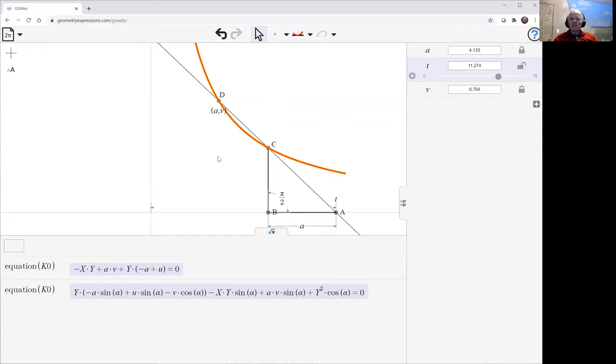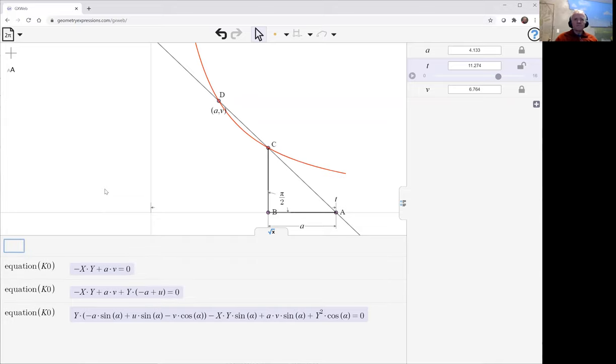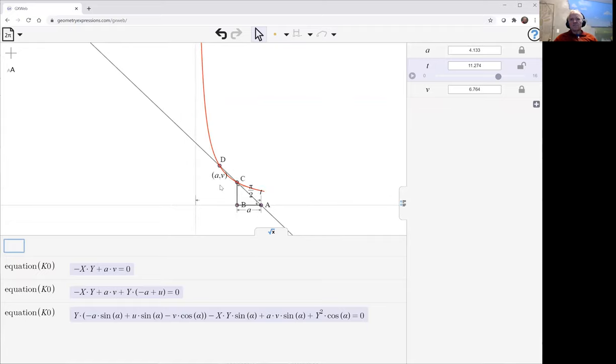Application in a, a times v, a, b. And then the equation of the curve is going to be y equals av over x, just a constant times y equals one over x.